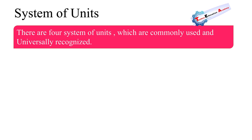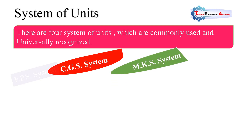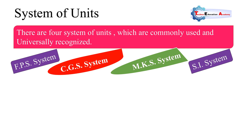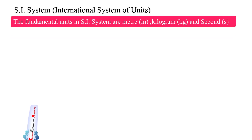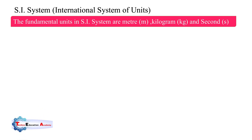In the system of units, there are four systems commonly used and universally recognized: the CGS system, MKS system, FPS system, and SI system. The full form of FPS is foot-pound-second, CGS is centimeter-gram-second, MKS is meter-kilogram-second, and SI system has fundamental quantities of meter, kilogram, and second.